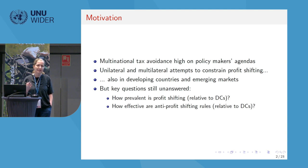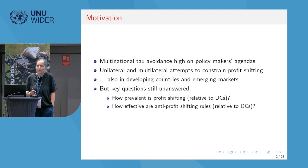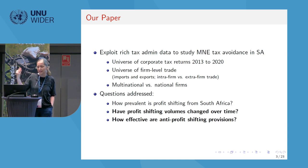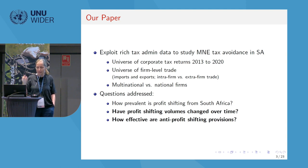We have some evidence, but it mainly concerns the developed world — especially on the second question — and there's reason to believe these results may not be externally valid for less developed countries, among other reasons because tax capacity in these nations is lower. What we do here is leverage very rich data from South African tax administrative records, where we can see the universe of corporate tax returns and link that to the universe of firm-level trade data in a very fine-grained way, covering six-digit product categories between South African firms and partner countries, allowing us to distinguish between multinational and national firms.